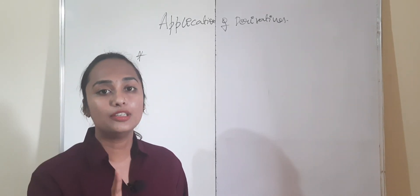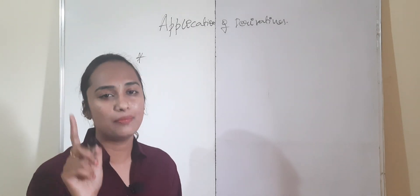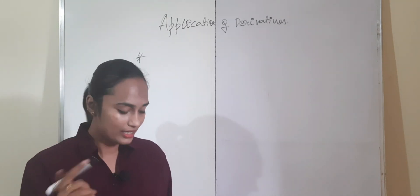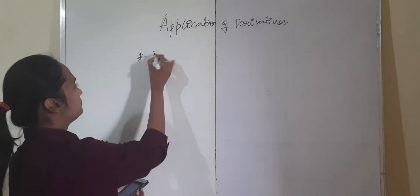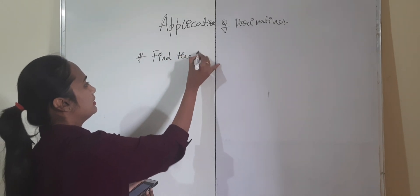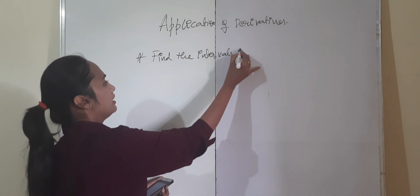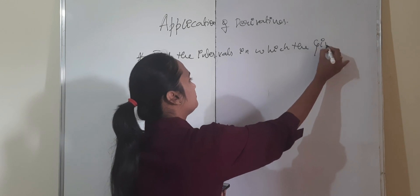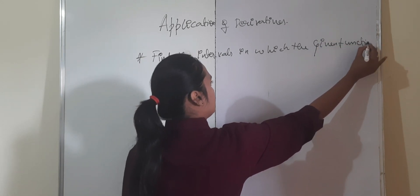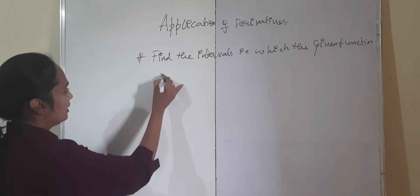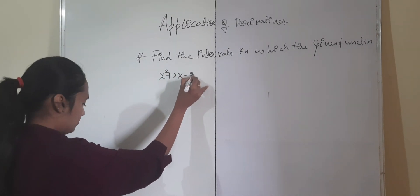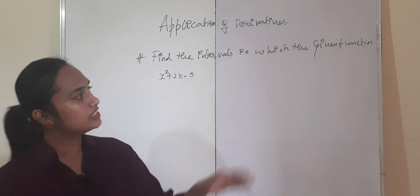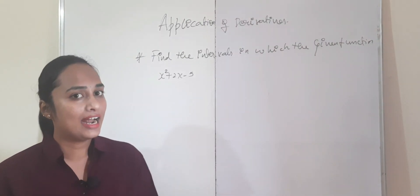It is the second exercise. One question will definitely come and it is for three marks. I will be explaining two questions on that. Find the intervals in which the given function f(x) = x² + 2x − 5 is increasing and decreasing. So we need to find the intervals in which the given function is increasing and decreasing.